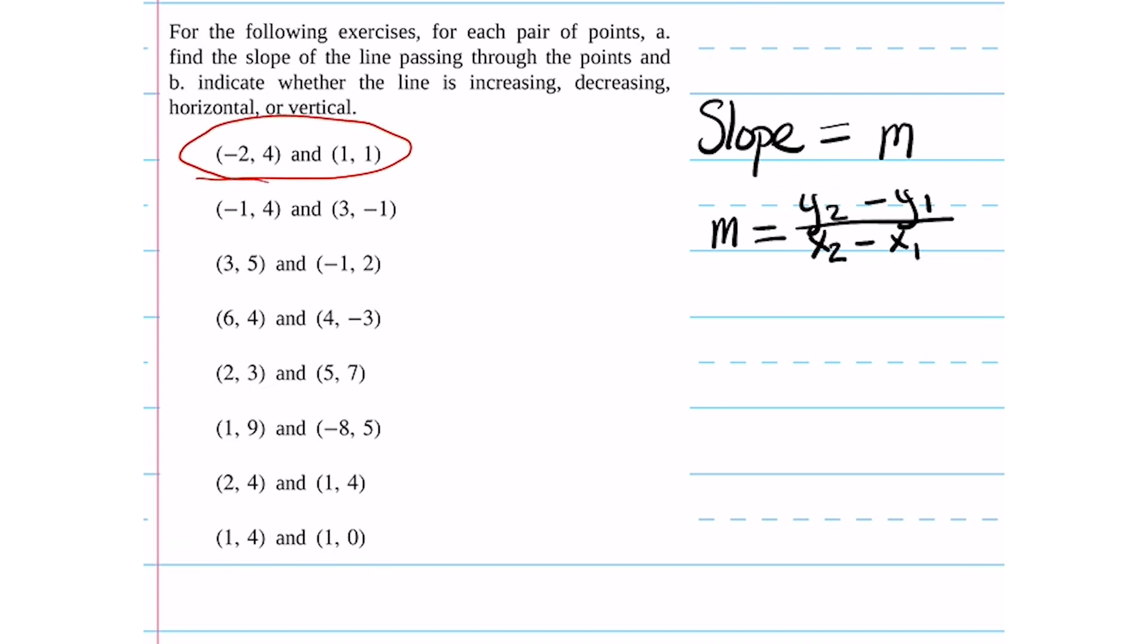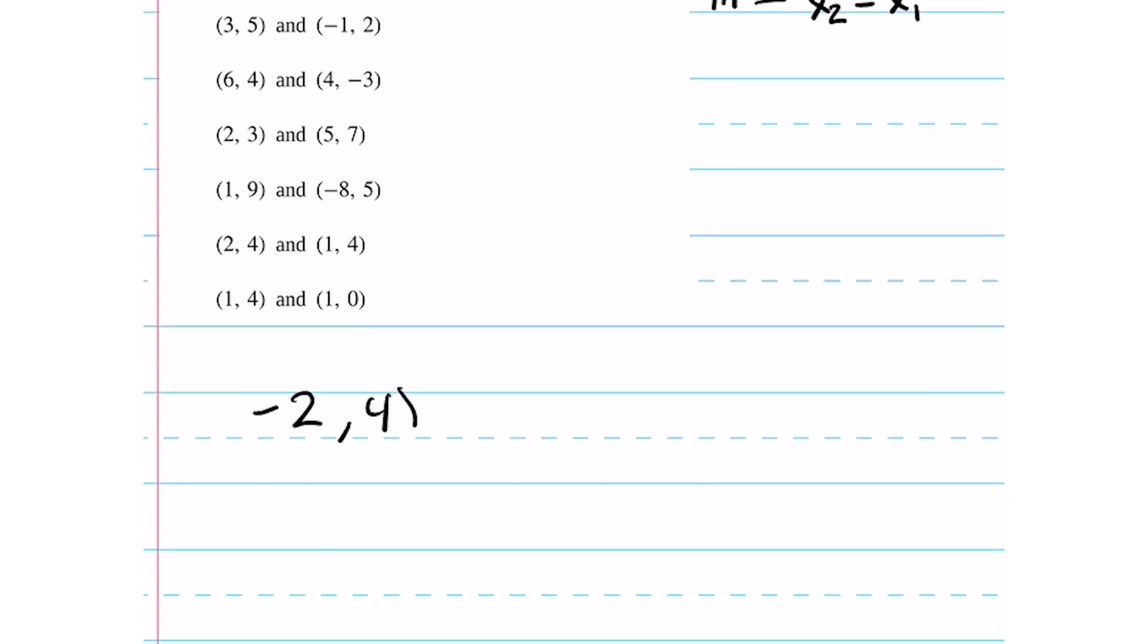Our first pair of points is negative two, four and one, one. When approaching these problems, it is best to start by writing points one and two out, and labeling their x and y.